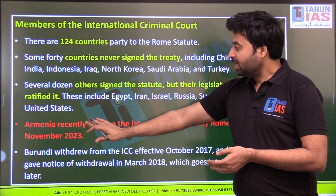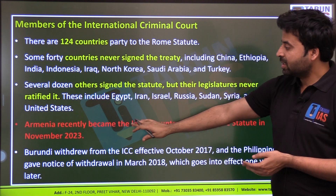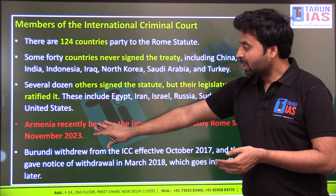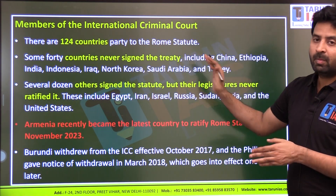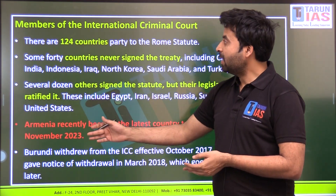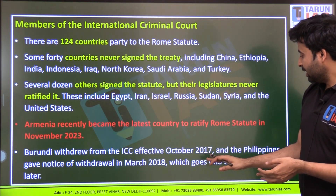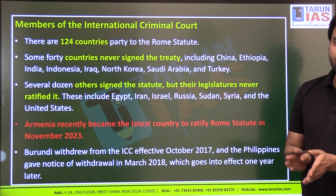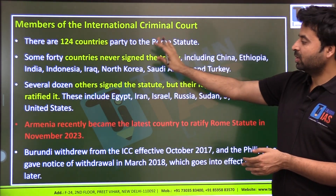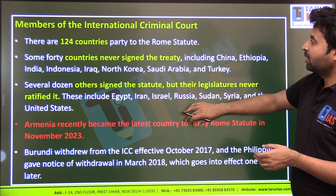Armenia is a recently joined member of the International Criminal Court, having joined in November 2023, meaning it has both signed and ratified the Rome Statute. Some countries that withdrew their membership from the ICC in recent times include Burundi and the Philippines.